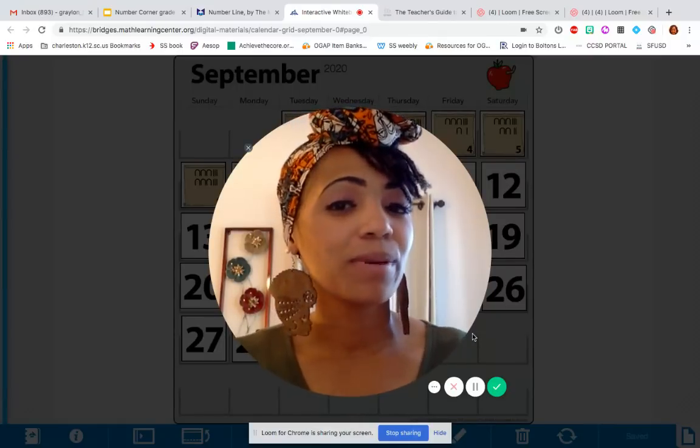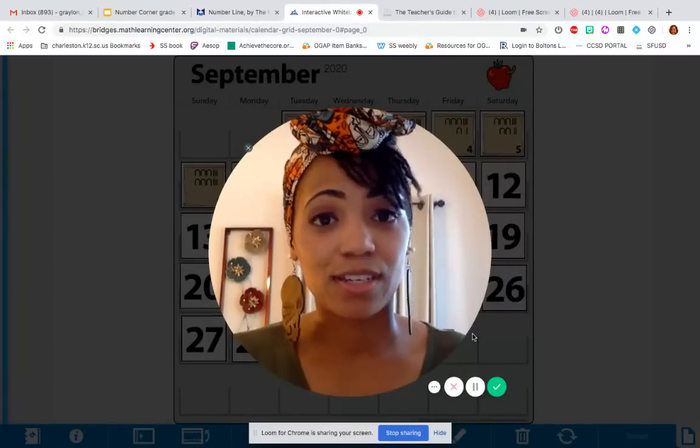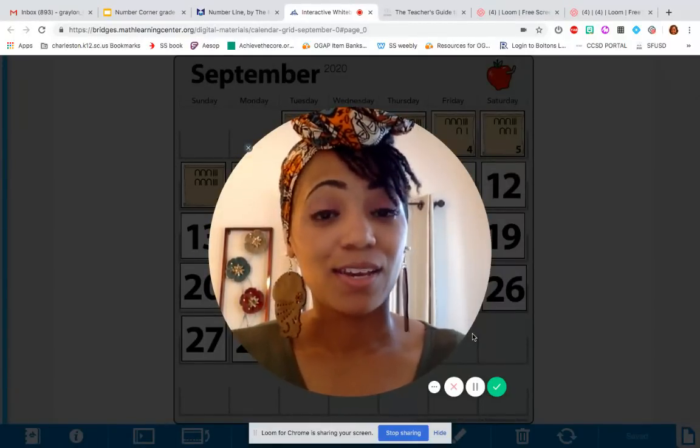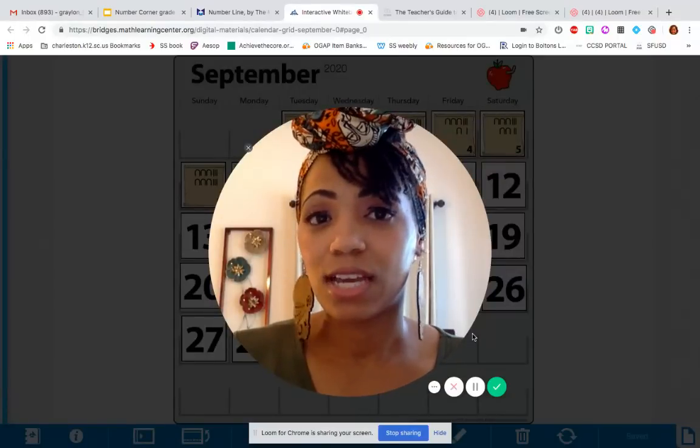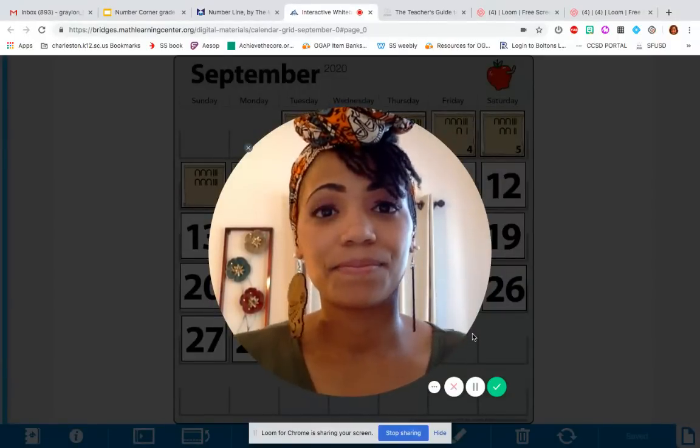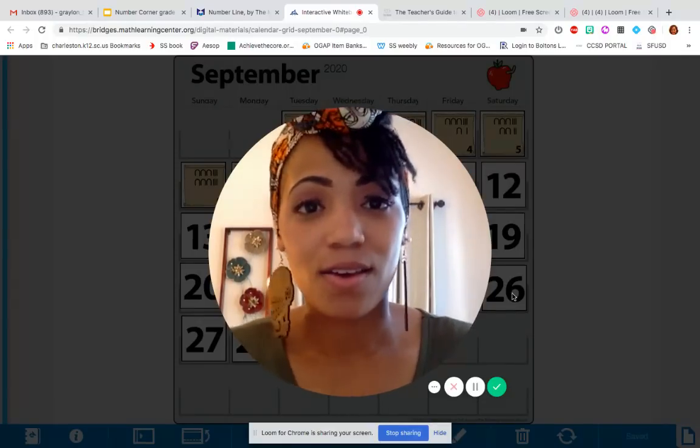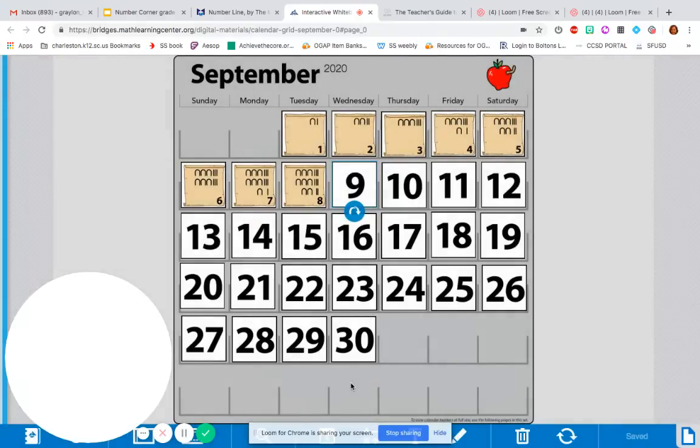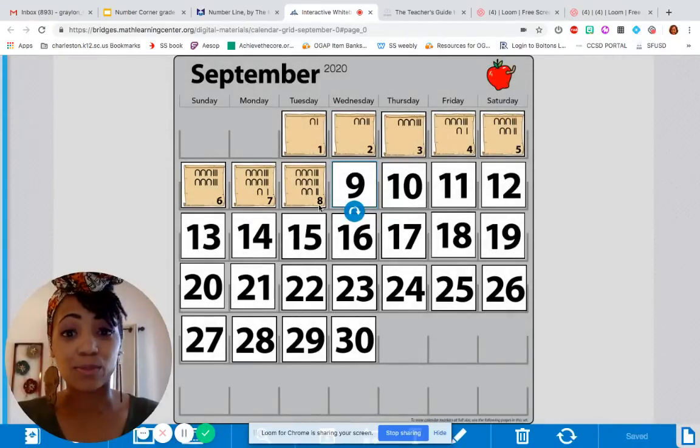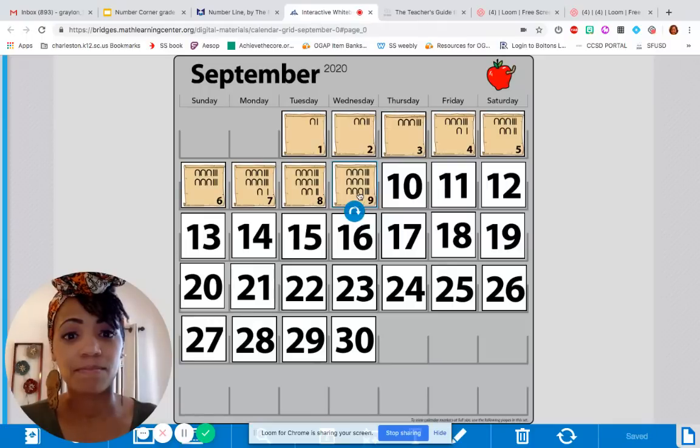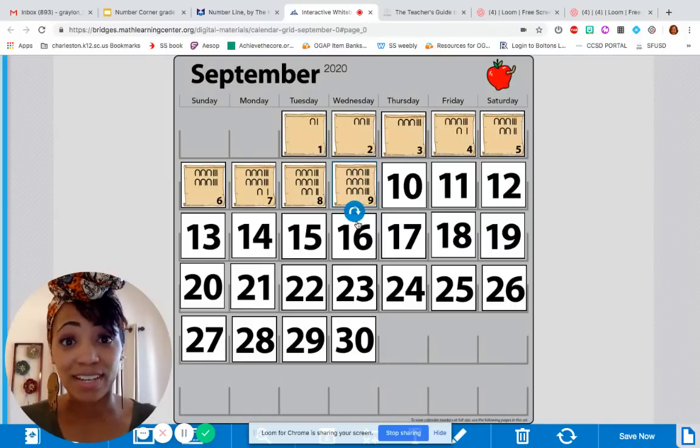And so you may have made a prediction about what you think today's calendar grid marker is going to look like. Let's see if your prediction is right. If you haven't made a prediction already, go ahead and think about what you saw yesterday and see if you can predict what you may see today. Okay, I'm ready to show you. So here's what we saw for all these other days in September. Today's September 9th, and here's our calendar marker.